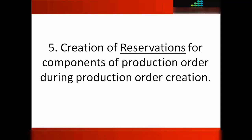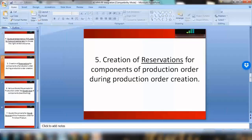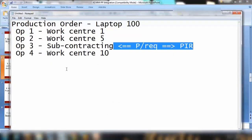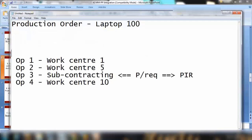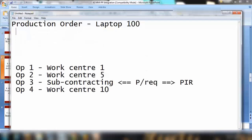Point number five is creation of reservations for components of a production order during production order creation. We already covered the topic of reservation before in SAP MM training. Here we're discussing the integration of reservation — that means whenever a production order is created, reservations are automatically generated for the required components.